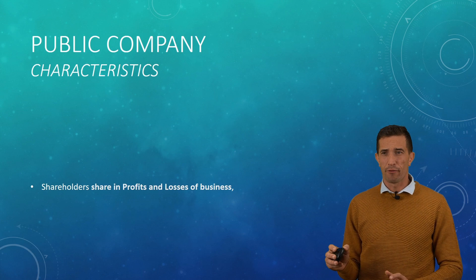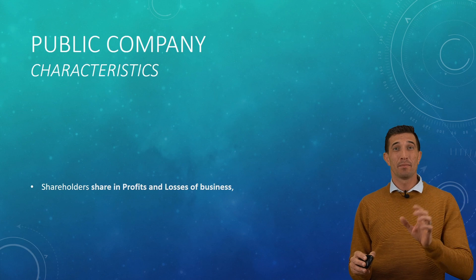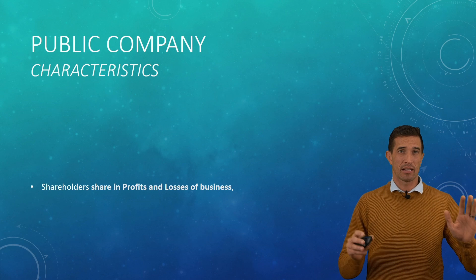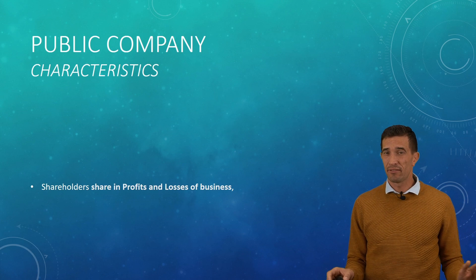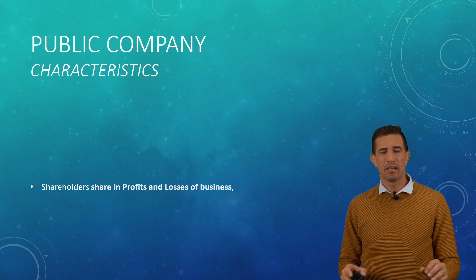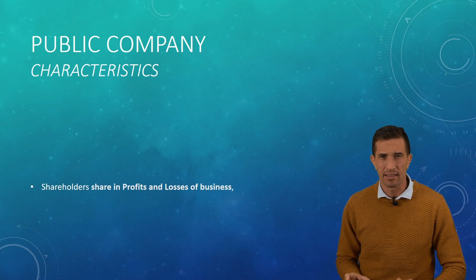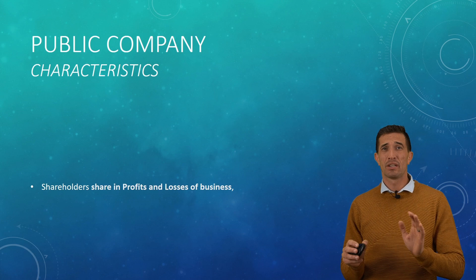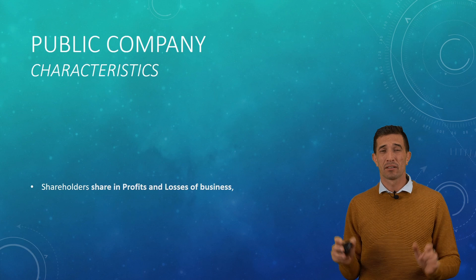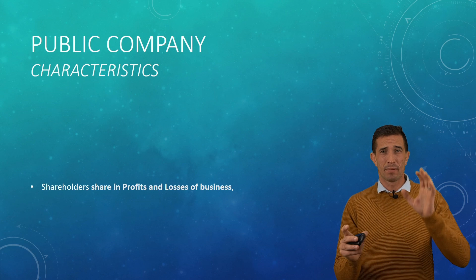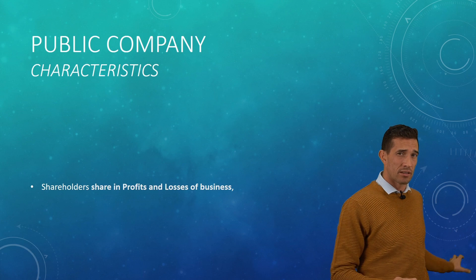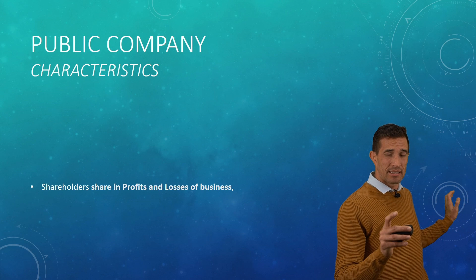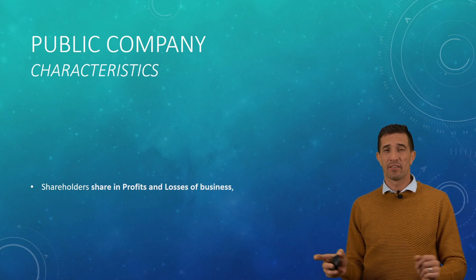You have to share in the profit and losses of your business, which means if the business does not make profit and makes losses, you don't get dividends at that time. It all depends on the type of shares you have. But overall, with a general share, there are no dividends shared in a difficult time. So when COVID struck and businesses didn't make profit, those shareholders — the owners — didn't make their dividends.